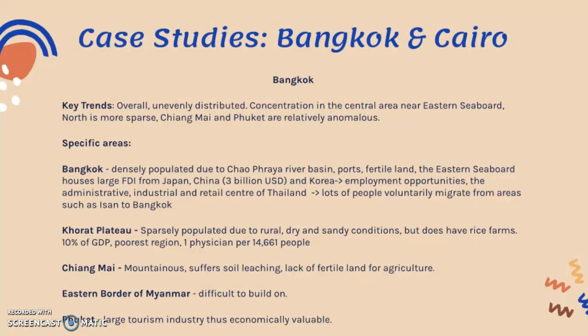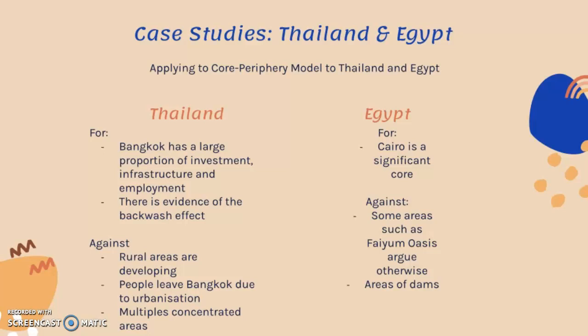Applying the core-periphery model to Thailand: voluntary internal migration moves heavily toward Bangkok due to employment and economic opportunities. Bangkok has a large proportion of investment, infrastructure, and employment, and there is evidence of the backwash effect — people come to Bangkok, gain skills and ideas, then bring them back to peripheral areas. However, rural areas are developing, and multiple concentrated areas like Chiang Mai and Phuket are arguably different cores. People also leave Bangkok due to congestion, pollution, and rising costs of living.